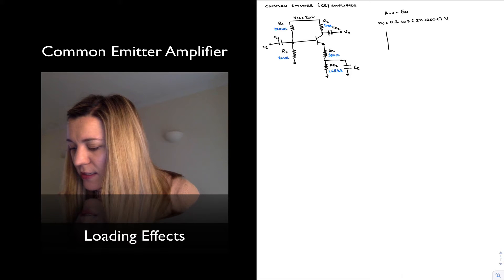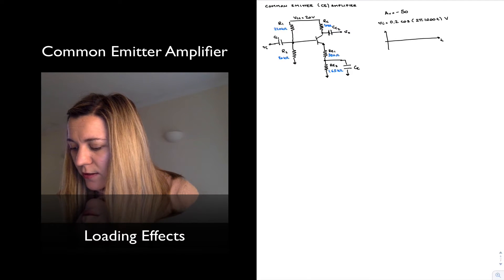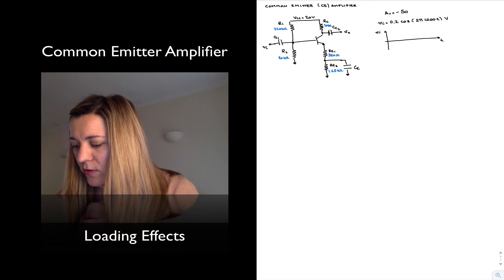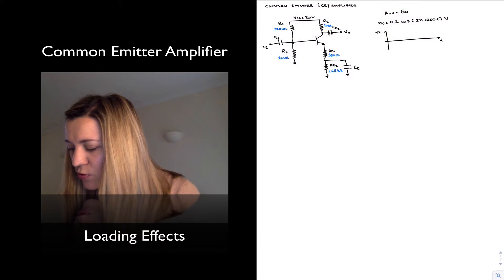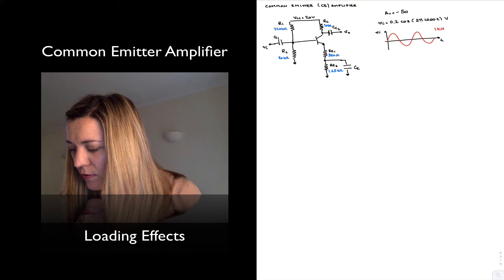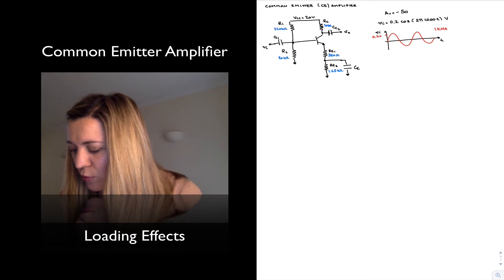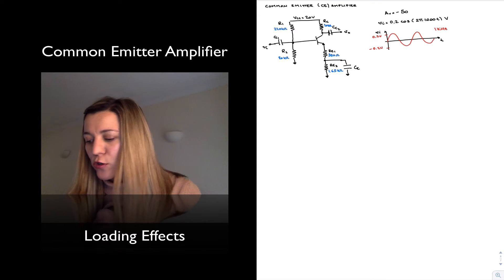I can represent that signal graphically in the time domain. This is what it will look like, a sinusoid at 1 kilohertz with amplitude of 0.2 volts, oscillating between 0.2 volts and negative 0.2 volts.